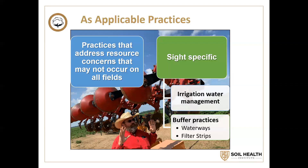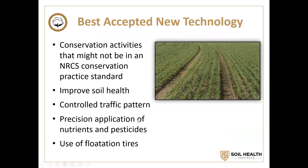There will always be practices that are as-applicable — not every field has an open ditch or needs a filter strip or a buffer, and irrigation water management doesn't apply to every field. These practices are site-specific and address certain concerns not every field would have. I like this picture of Dr. Bill Robertson in Arkansas showing what we call a furrow runner — this producer improved the function of his soil so well that his infiltration increased so much he's having trouble getting water from one end to the other in surface irrigation. And then there's a whole new array of technology, like controlled traffic patterns, precision application of nutrients and pesticides, and flotation tires — more will be coming down the pike.